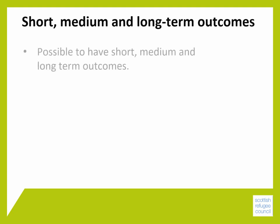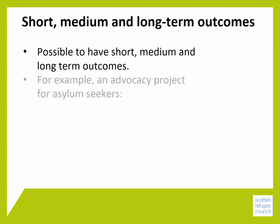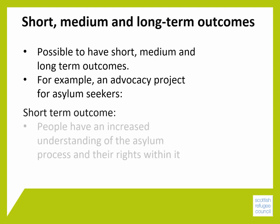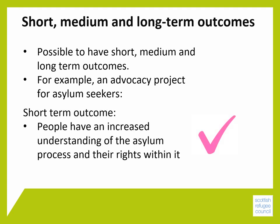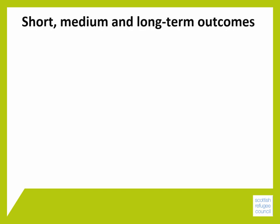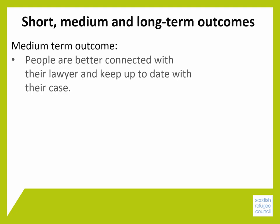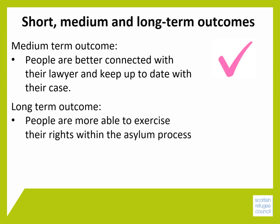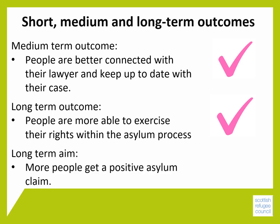It's possible to have short, medium, and long-term outcomes. For example, in an advocacy project for asylum seekers: a short-term outcome could be 'people have an increased understanding of the asylum process and their rights'; a medium-term outcome could be 'people are better connected with their lawyer and keep up to date with their case'; and a long-term outcome would be 'people are more able to exercise their rights within the asylum process,' contributing to more people getting a positive asylum claim.